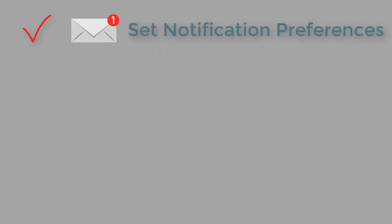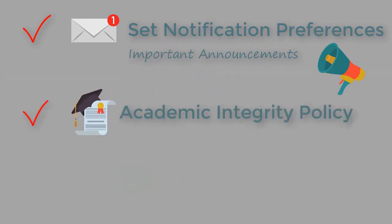When you get to Module 1, you'll find three items that are required before you can move on to the next modules. One is setting your notification preferences. You'll find directions how to do that. The most important thing is that they're set so you'll get my announcements — I post important stuff every week, and if you don't see that in your email, you may miss things that will help your grade. You also need to read the Academic Honesty Policy from OTC and watch a plagiarism video, and when you've done that, you'll check that box.